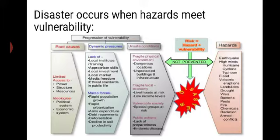Disaster occurs when hazards meet vulnerability. The disaster risk equals hazard plus vulnerability. The progression of vulnerability involves root causes, dynamic pressures, unsafe conditions — and this combined with hazards leads to disaster. Both are not easily prevented.